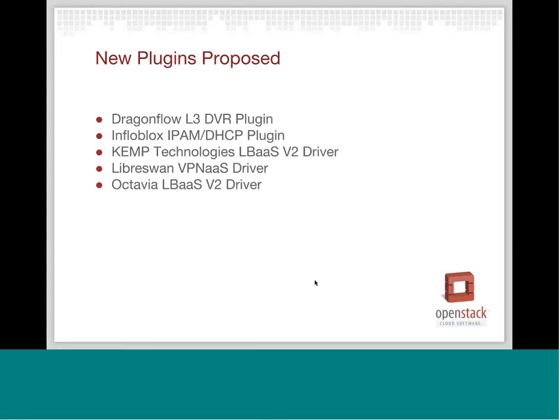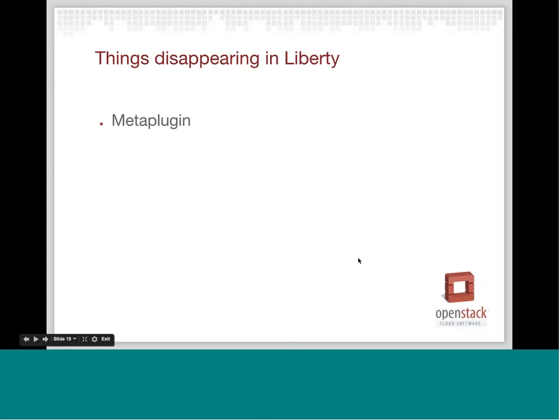Just a quick list of what plugins are proposed. We have new plugins and drivers proposed: the Dragonflow L3 DVR plugin, which was proposed as a separate repository and implements L3 routing and DVR functionality. InfoBlox has their IPAM and DHCP plugin, which will work upstream once the IPAM work goes in. Calico Technologies has proposed an LBaaS driver for V2. We have new folks who have proposed Strongswan as a VPN driver. And of course we have the Octavia LBaaS V2 driver as well. At this point of the cycle we actually have one plugin that's disappearing — the meta plugin is going to be deprecated. I don't believe anyone other than NTT was using the meta plugin, and they weren't maintaining it, so they've chosen to deprecate it. It's the only thing we have disappearing at this point.